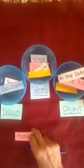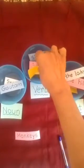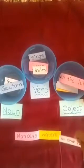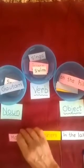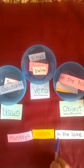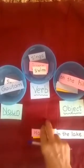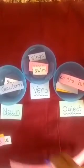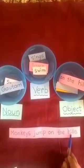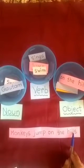I have taken monkeys. Monkeys is a noun. Next I will take water — in the lake. Children, is this sentence correct? No. Monkeys waters in the lake — no, it is not correct. So what is the correct sentence? The correct sentence is: monkeys jump on the hills. This is the correct sentence.